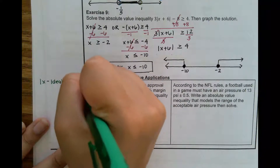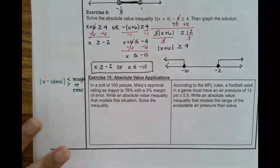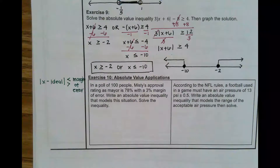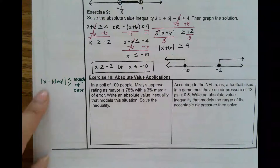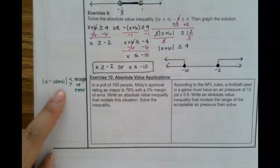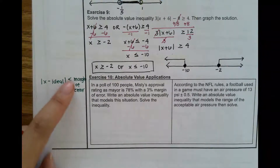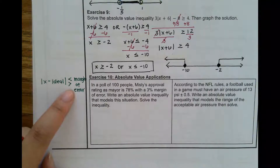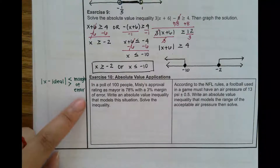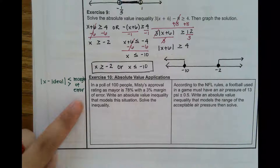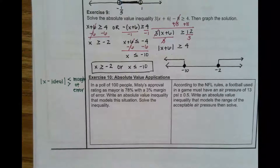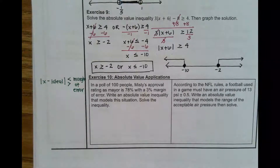So this is our equation: the absolute value of x minus our ideal, our goal, what we want. And then depending on the question, either less than or greater than what we call our margin of error — how far off we can be. So let's start with this first question.